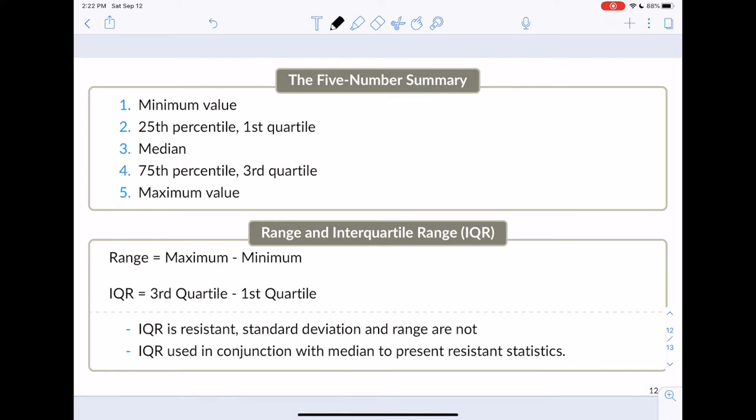So, that's the five number summary, and they're going to be things that we're going to use when we're creating box plots. It's going to become a really important thing. Now, from this five number summary, we can calculate two other measures of variability.